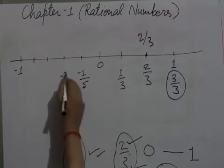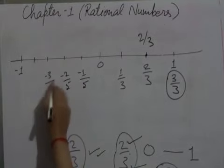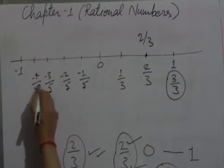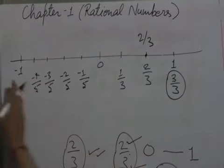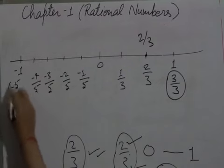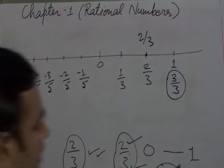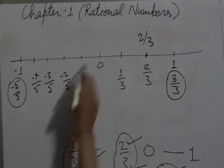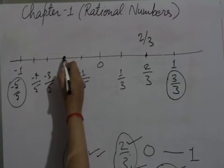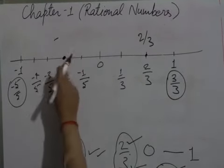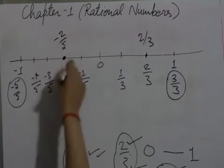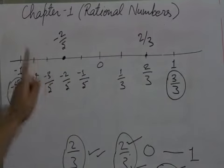At the first part we write minus 1 upon 5, at the second minus 2 upon 5, at the third minus 3 upon 5, and at the fourth minus 4 upon 5. Minus 1 is equivalent to minus 5 upon 5. Since the numerator is 2, we find the second mark which exactly denotes minus 2 upon 5. We mark a dark point there and write minus 2 upon 5 — this place exactly shows minus 2 upon 5.